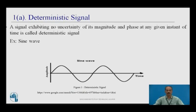First is the deterministic signal. A signal exhibiting no uncertainty of its magnitude and phase at any given instant of time is called a deterministic signal. An example is the sine wave. We can predict the signal at any time — for instance, the positive half cycle repeats after a certain interval of time. This type of signal is called a deterministic signal.